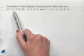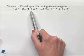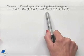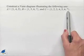We have set A = {1, 4, 5}, set B = {1, 5, 6, 7}, and U equal to the set {1, 2, 3, 4, 5, 6, 7}.